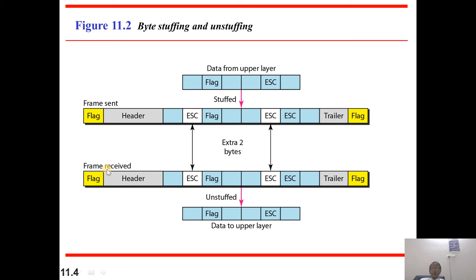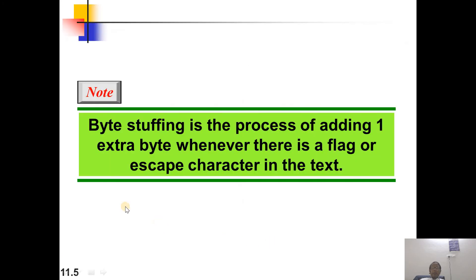The frame has been sent and the frame has been received. At the receiver side, the escape bytes will be removed, and the header, trailer, and flag field will also be removed — and the original data from the upper layers will be transferred back to the upper layer. Byte stuffing is the process of adding an extra byte whenever there is a flag or escape character in the text.